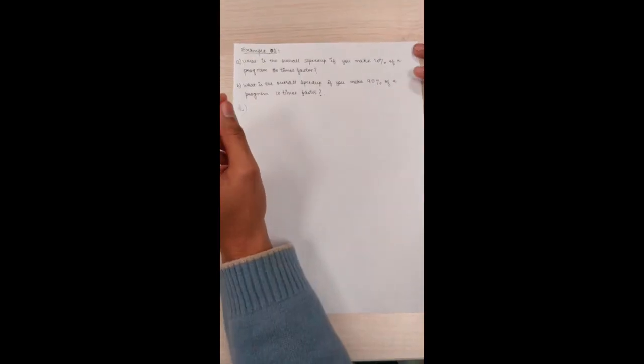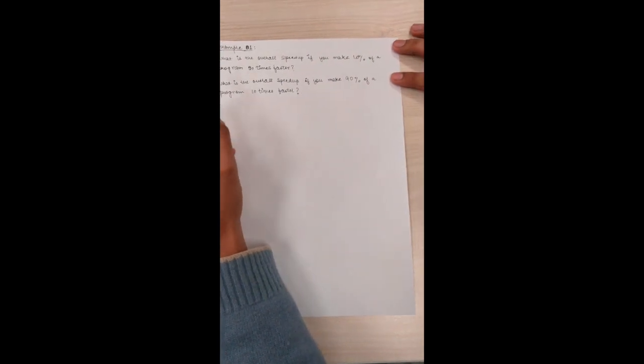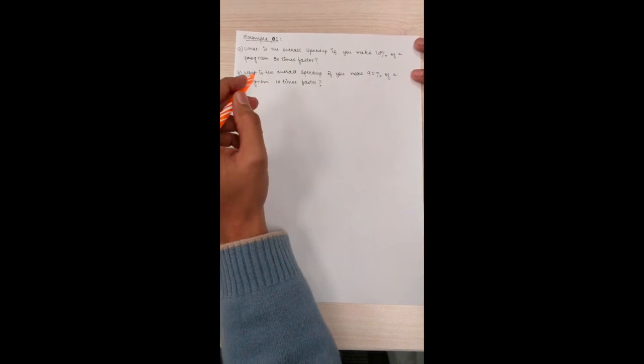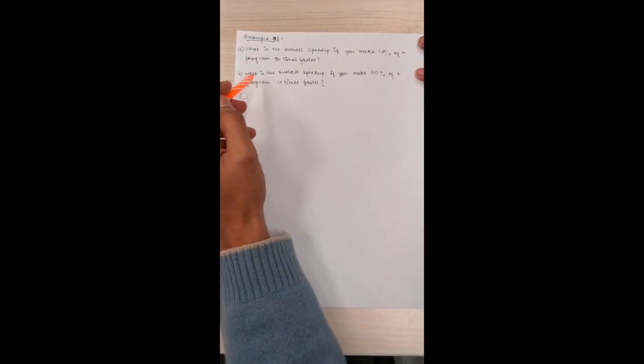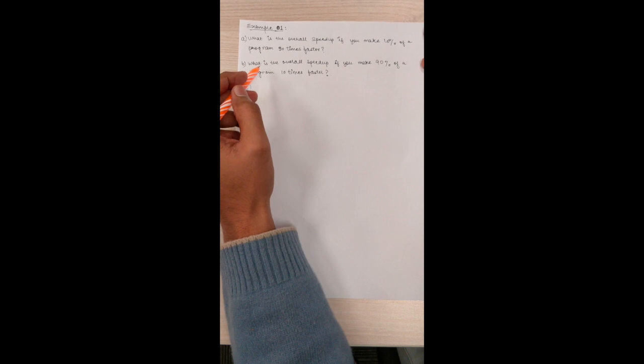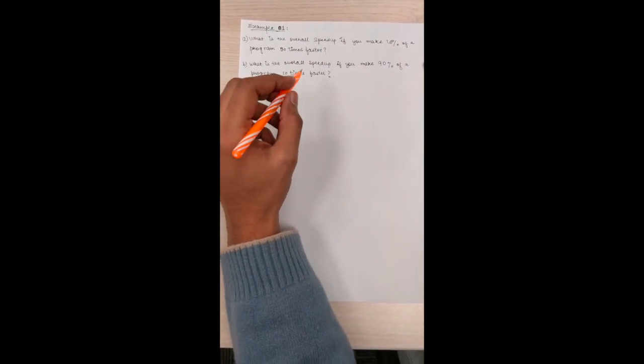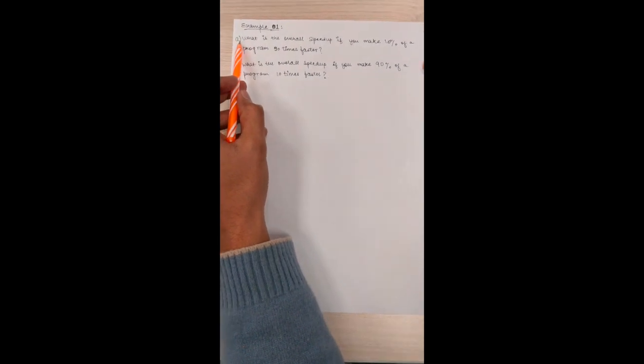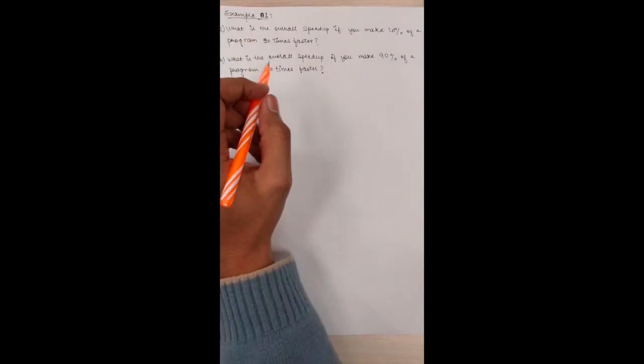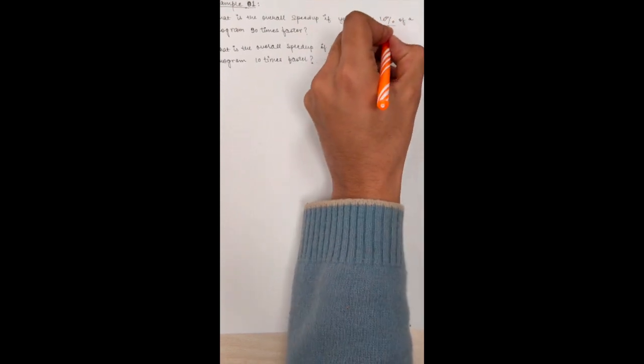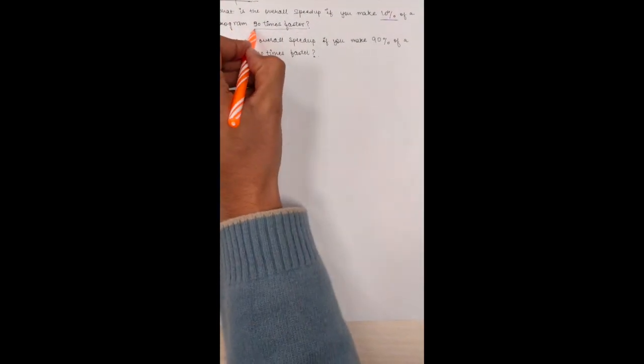Let's do some questions on the basics of Amdahl's law. We have a question: What is the overall speed up if you make 10% of a program 90 times faster? And there is another question similar like that: What is the overall speed up if you make 90% of a program 10 times faster? Let's look at the first part of the question first. We want to make 10% of a program 90 times faster.